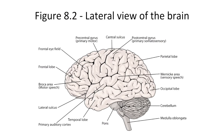This is figure 8.2, which is a lateral view of the brain. This is posterior and this is anterior. Broca's area is right here, in the inferior frontal gyrus.